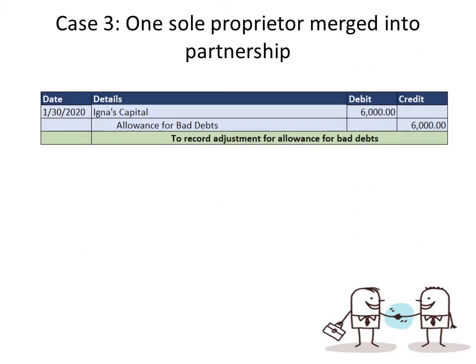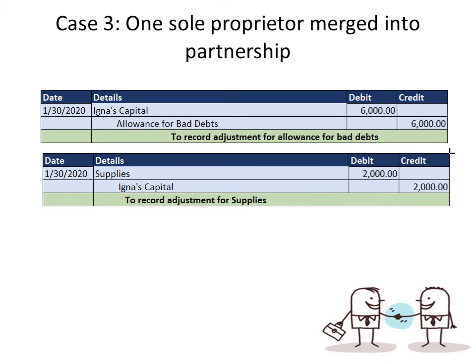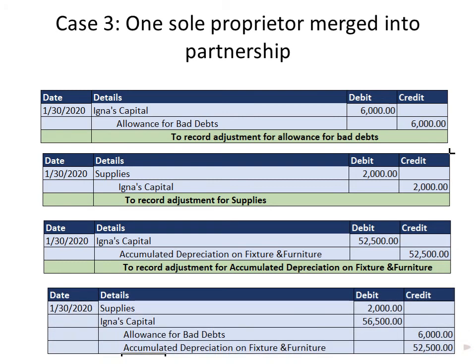Let's record the entries. Entry 1: debit Igna capital $6,000, credit allowance for bad debts $6,000 — to record adjustment for allowance of bad debts. Entry 2: debit supplies $2,000, credit Igna capital $2,000 — to record adjustment for supplies. Entry 3: debit Igna capital $52,500, credit accumulated depreciation on fixtures and furniture $52,500 — to record depreciation adjustment. Compound entry: debit supplies $2,000 and credit Igna capital $56,500, allowance for bad debts $6,000, and accumulated depreciation $52,500 — same effect.